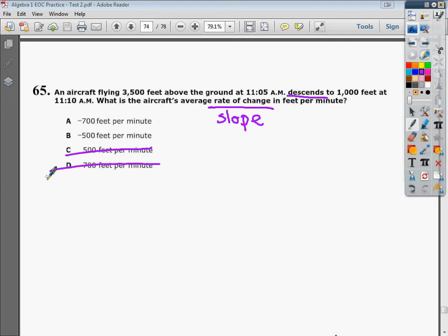Now I need to look at each one of these times and matching altitudes as separate points. So for instance, if I did 11:05 a.m., I'm at 3,500 feet. It's almost like I'm making a coordinate. And at 11:10 a.m., I'm at 1,000.